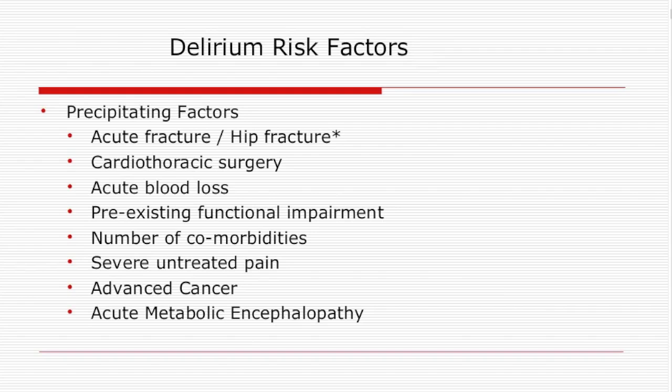Pre-existing functional impairment is another risk factor — a person with one or two dependencies in their activities of daily living is at increased risk. The higher the number of comorbidities, the more likely they will have delirium. Severe untreated pain can cause delirium — not just pain medications, but pain itself. Advanced cancer, especially at end of life, is associated with delirium. Acute metabolic encephalopathy can also precipitate delirium.